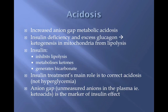Ketoacids produce an increased anion gap acidosis. Insulin deficiency and glucagon excess promotes ketogenesis from products of lipolysis. Giving insulin inhibits lipolysis, metabolizes ketones, and generates bicarbonate. Therefore, its main role is to correct the acidosis, although it obviously reduces blood sugar levels as well. Follow the effects of insulin through the anion gap.